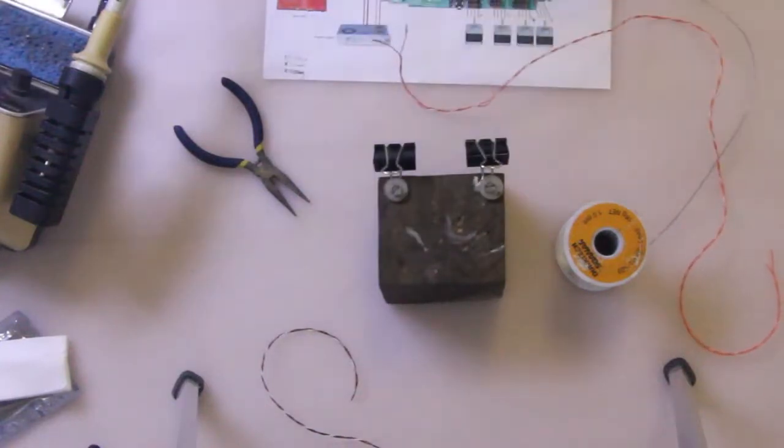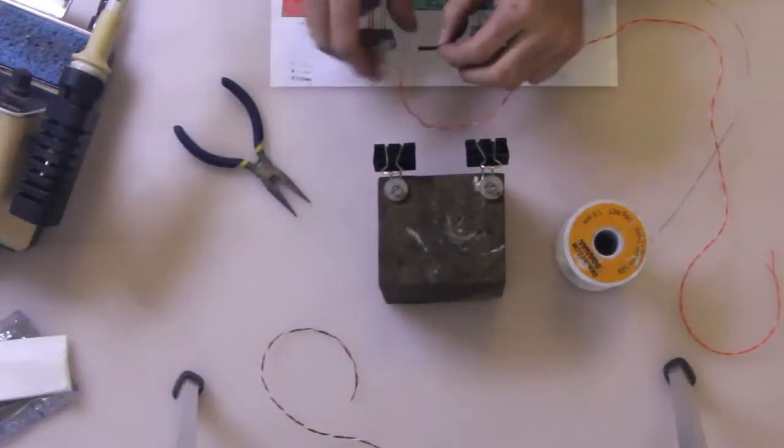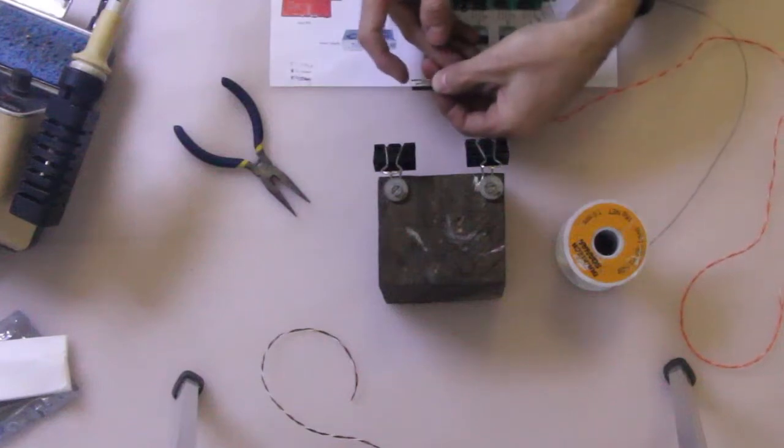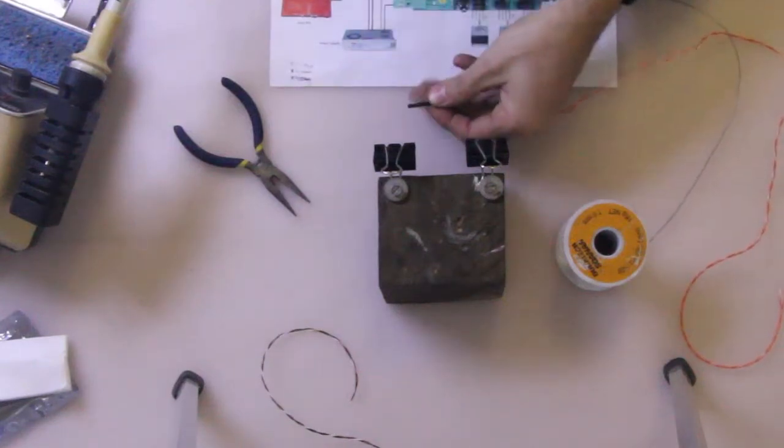So that's on. Cut some heat shrink, probably about 15 mil, just to cover the connector and a little bit of the insulation.